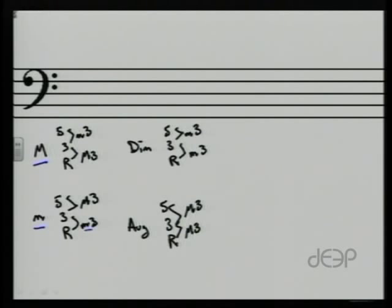A minor, which is a minor on the bottom, major on the top. A diminished, which consists of two minor thirds. And an augmented, which consists of two major thirds.